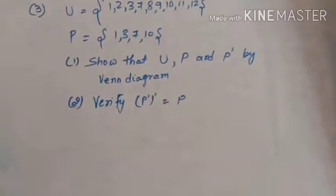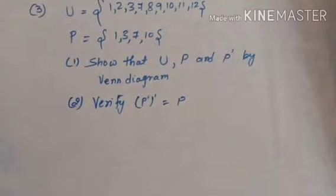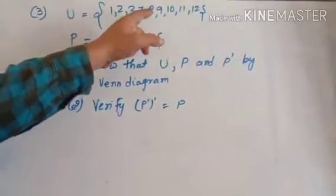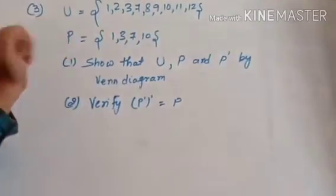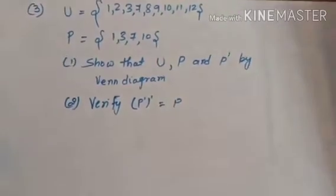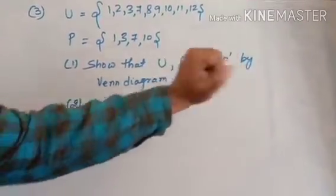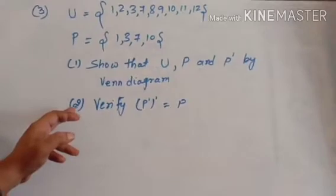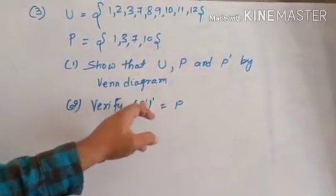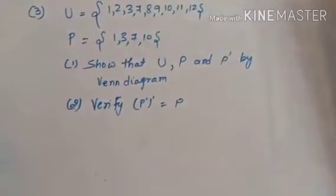In the second part of our video of Exercise 1.3, we are going to solve question number 3. Question number 3: if U is equal to {1, 2, 3, 7, 8, 9, 10, 11, 12}, where U stands for universal set, and P is equal to {1, 3, 7, 10}, then show U, P, and P complement by Venn diagram. The second part asks us to verify that complement of P complement is equal to P.